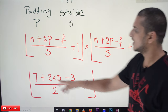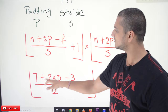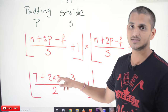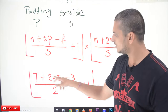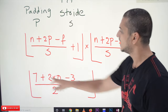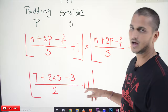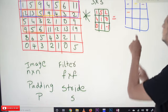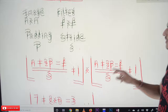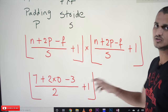Let's verify with our second example. Image size is 7 by 7, so: (7 + 2×0 − 3) / 2 + 1 = (7 − 3) / 2 + 1 = 4/2 + 1 = 2 + 1 = 3. So the output image size is 3 by 3, which matches what we got. The same calculation applies for both dimensions and we get a 3 by 3 image.